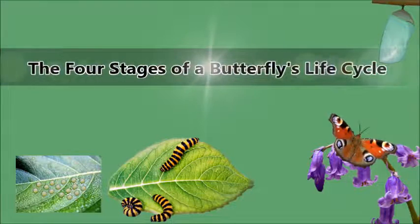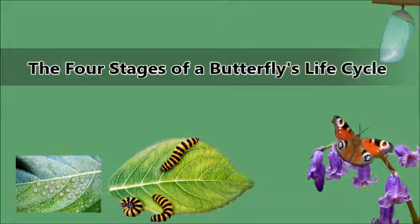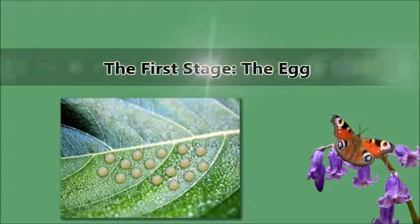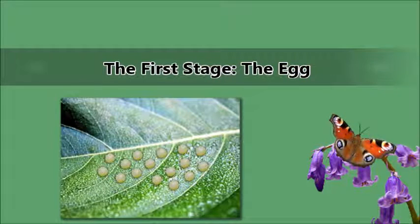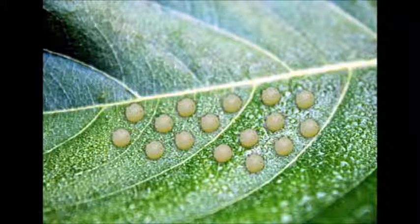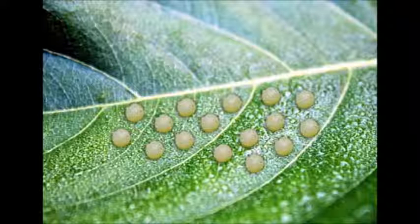The four stages of a butterfly's life cycle. The first stage: the egg. A butterfly starts life as a very small, round, oval, or cylindrical egg. The egg shape depends on the type of butterfly that laid it. Females lay their eggs on or near the plants that will later be eaten by the caterpillar when it hatches. Many species lay a lot of eggs at once so that at least some survive, and the eggs are laid very close together.